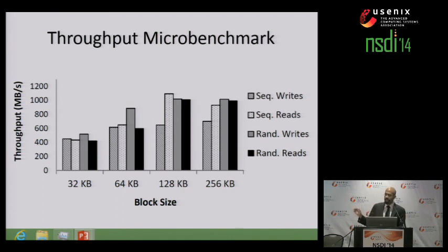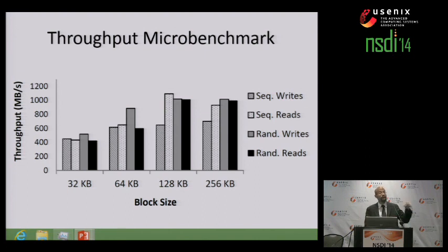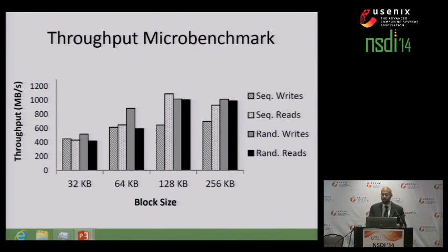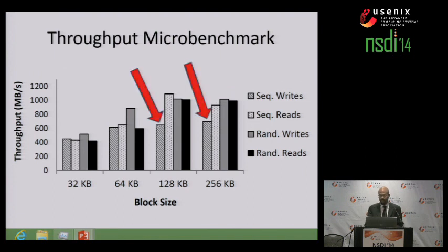In this micro-benchmark, we look at Blizzard's throughput for reads and writes of various sizes. The Blizzard drive was backed by 128 remote disks, and Blizzard used nested striping with none of the delayed durability tricks. Nested striping uses write-through operations on the remote disks, so the virtual drive did not receive acknowledgments for writes until they were actually persistent on some remote disk. These throughput numbers represent Blizzard's maximum true throughput. We see that as block sizes get bigger, Blizzard's throughput can reach 1,000 megabytes per second or more, which is one of our key goals.